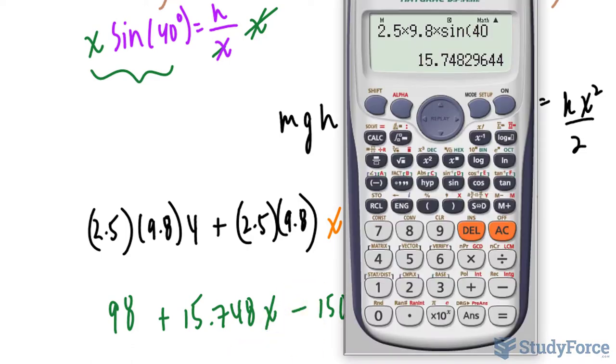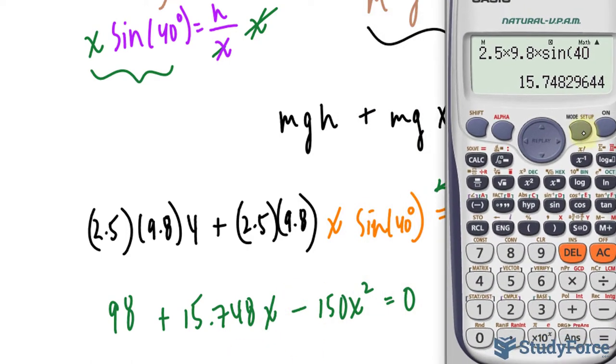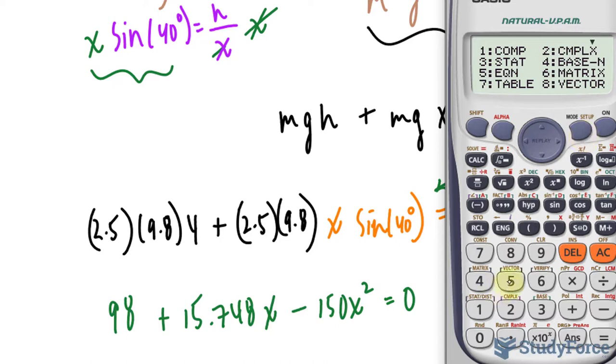Now you have to use the quadratic formula. Although I'm not going to waste my time writing it all down and doing it by hand, there's a software that I can easily find the roots by placing the value of a being negative 150. That's the coefficient of the x squared term, 15.748 and 98 as our constant.